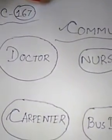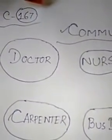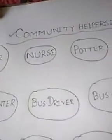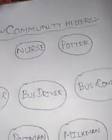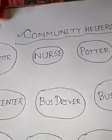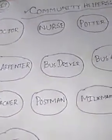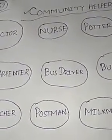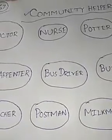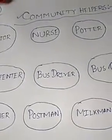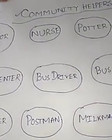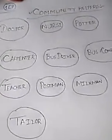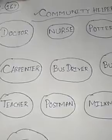Welcome friends to my channel Maya Rannakar Indian Food. This is my online class number 167. This is a GK class and the chapter is Community Helpers. There are many people who professionally help us, and that help benefits the society a lot. They are known as social friends or community helpers. Here I have given you such 10 names.